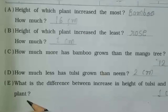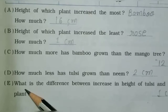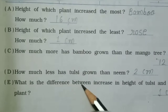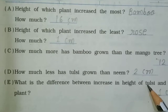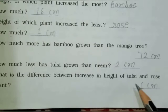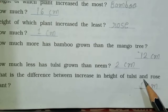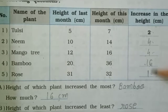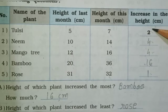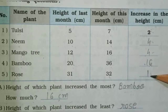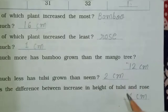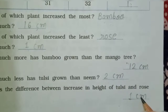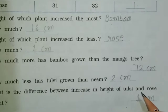Next question: what is the difference between the increase in height of tulsi and rose plant? Rose and tulsi ka difference — 2 minus 1 is equal to 1 centimeter. Write here: 1 centimeter. Question number 8 completed.